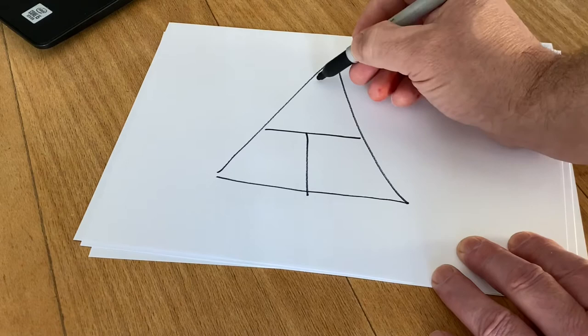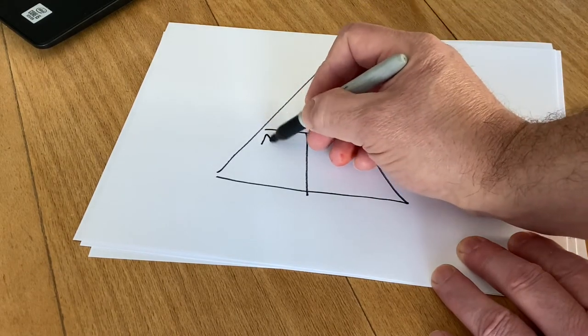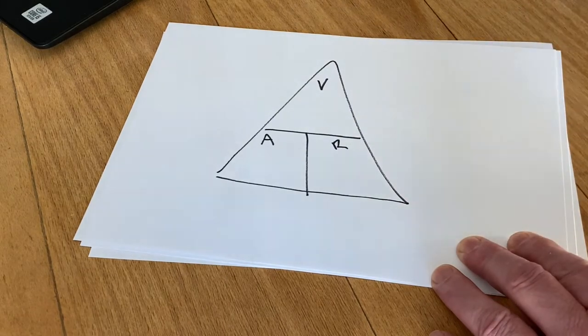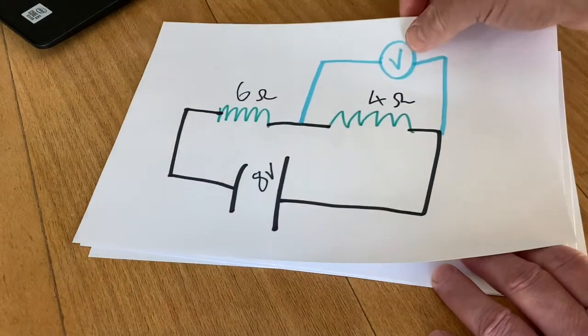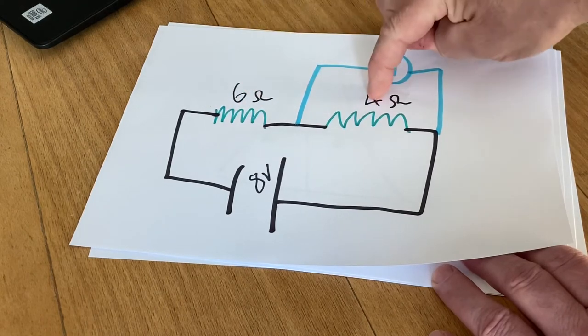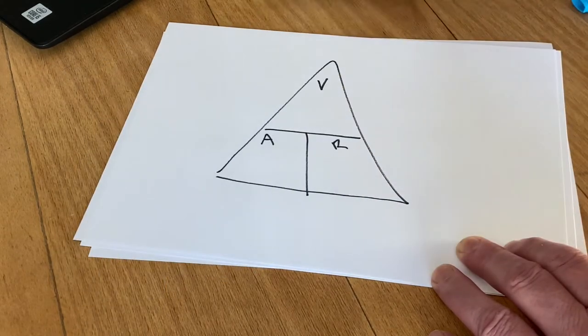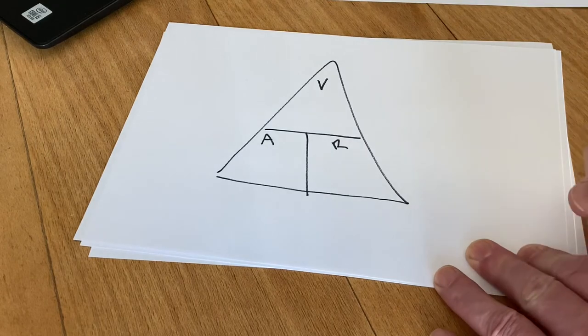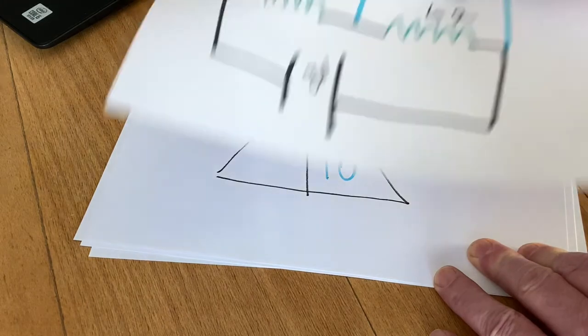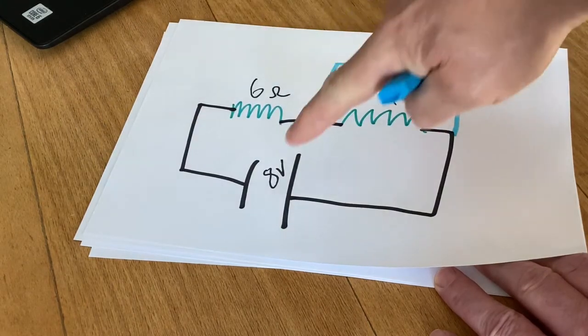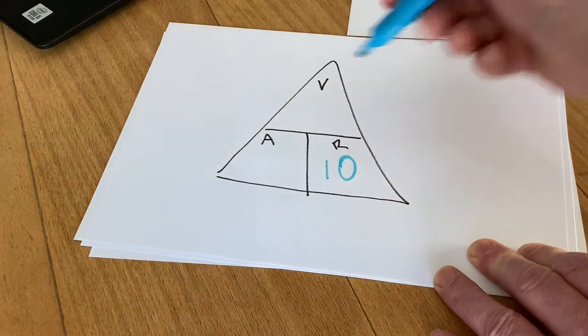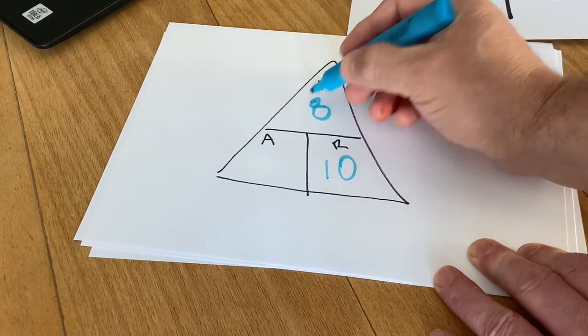Just again as a reminder, volts goes at the top, amps goes down here and resistance is here. The total resistance is 6 plus 4, so that's 10. So the total resistance is 10. And the voltage is 8 for the whole circuit.